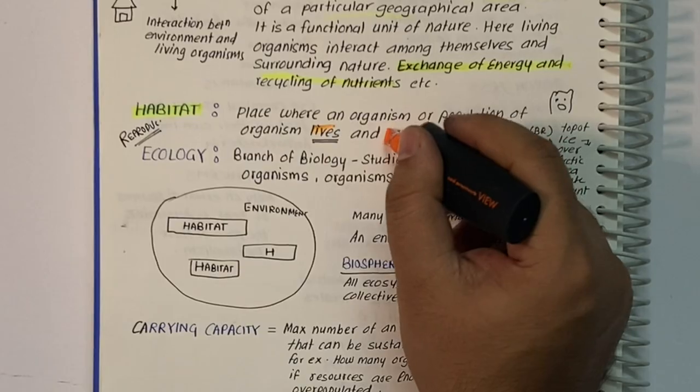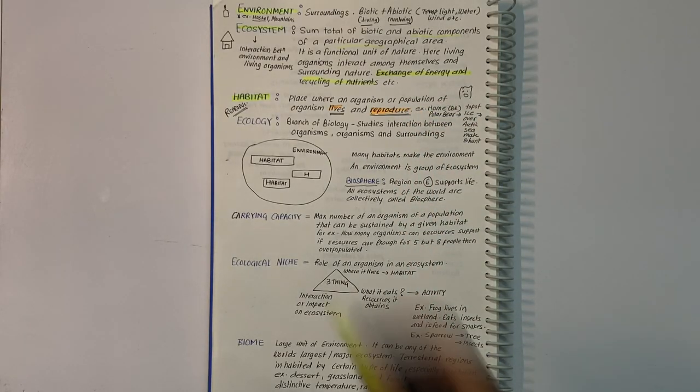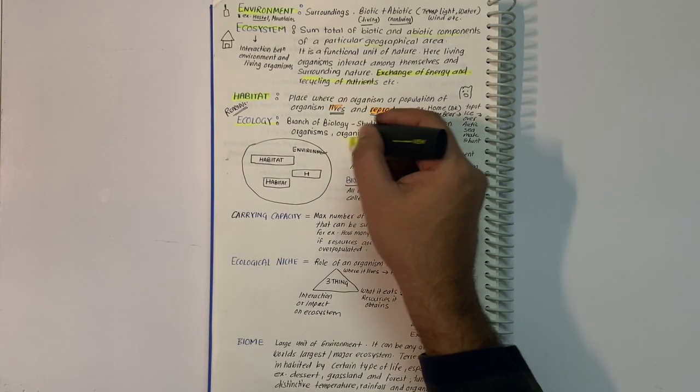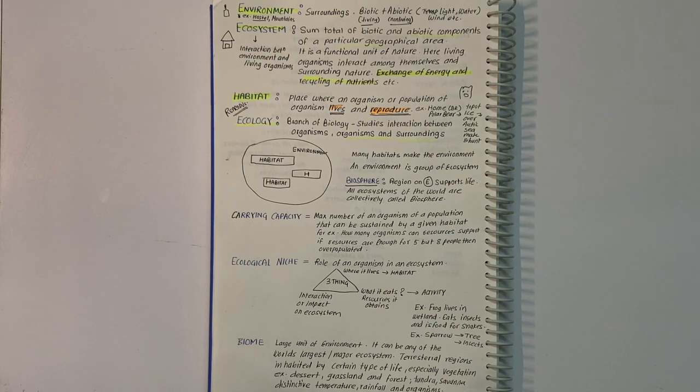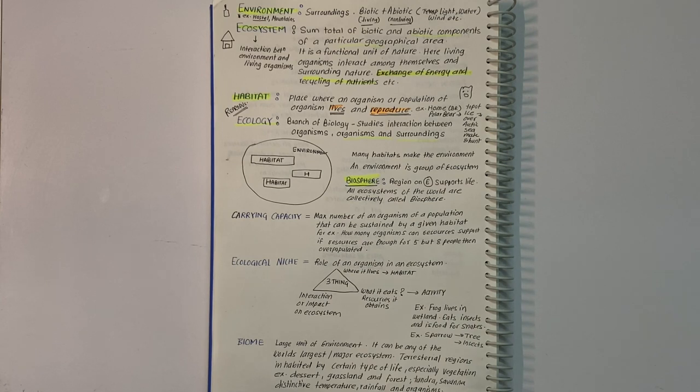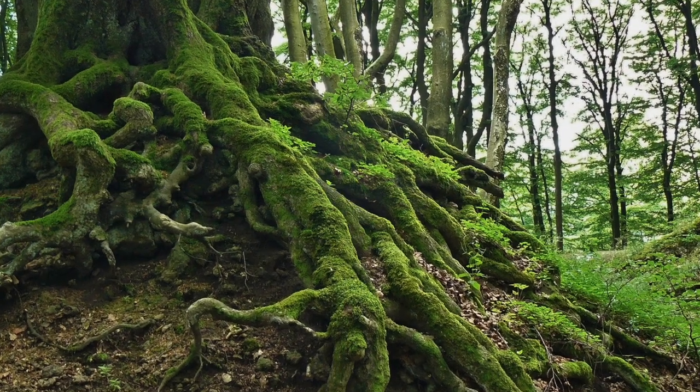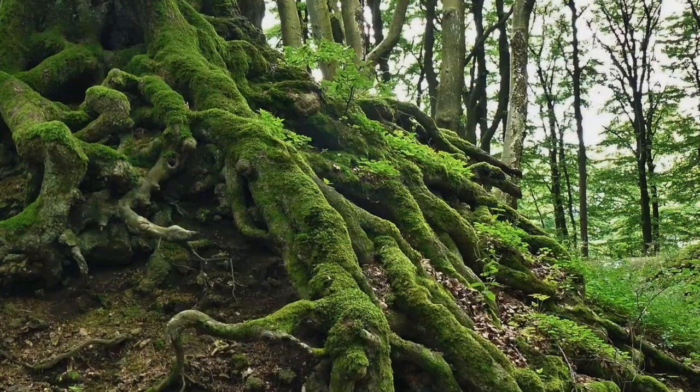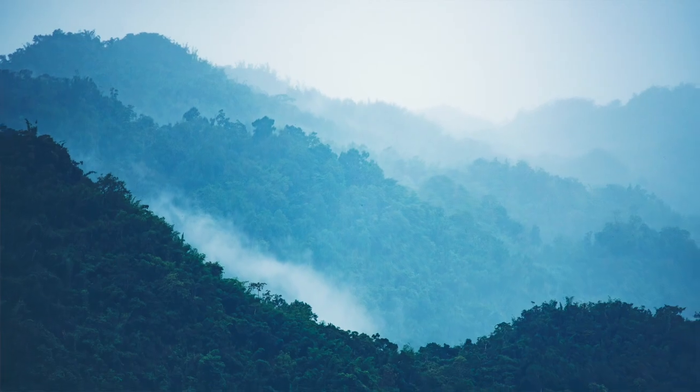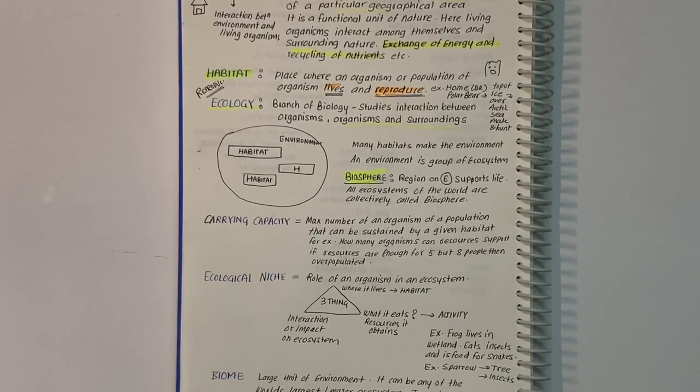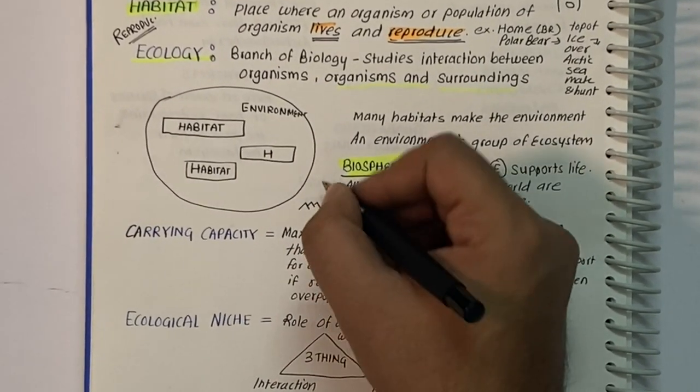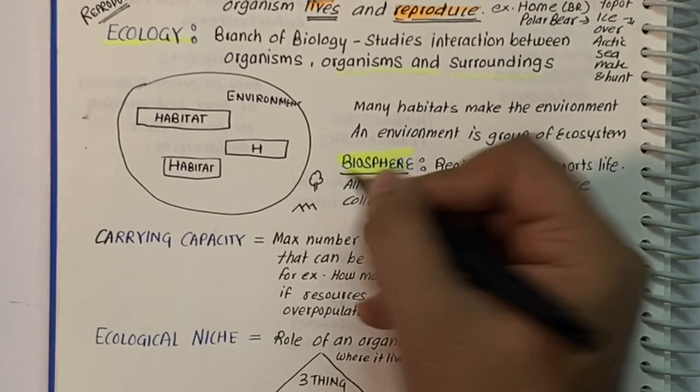Ecology is a branch of biology which studies interaction between organisms and between organisms and surroundings. Biosphere is made up of the part of Earth where life exists - from deepest root systems to dark ocean trenches, to lush rainforests and high mountain tops.